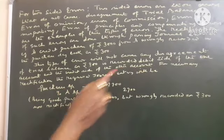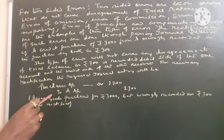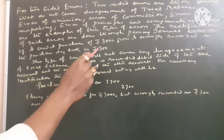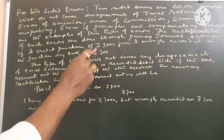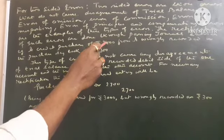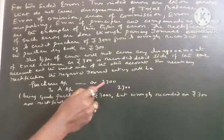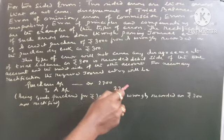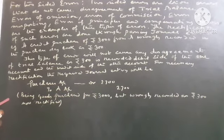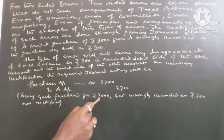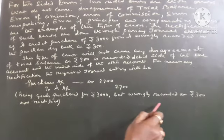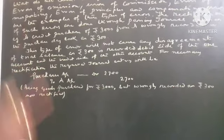For necessary rectification, the required journal entry will be purchase account debit to A account. Total goods purchased Rs. 3000 but previously recorded at Rs. 300. Now, we have to record Rs. 3000 minus Rs. 300. That is Rs. 2700. Purchase will be debited to A account also will be Rs. 2700. Narration being goods purchased for Rs. 3000 but wrongly recorded as Rs. 300 now rectified.